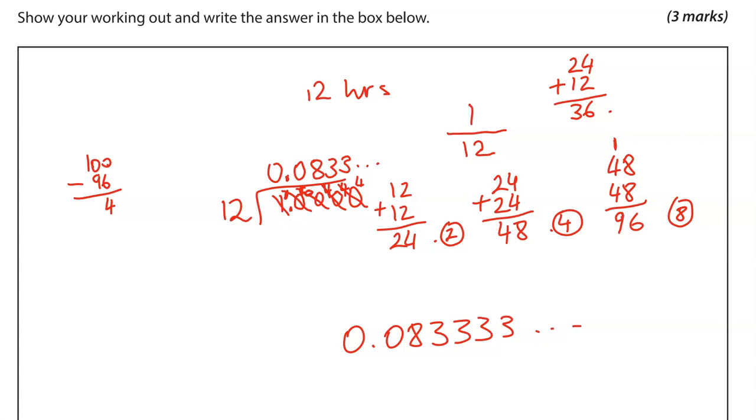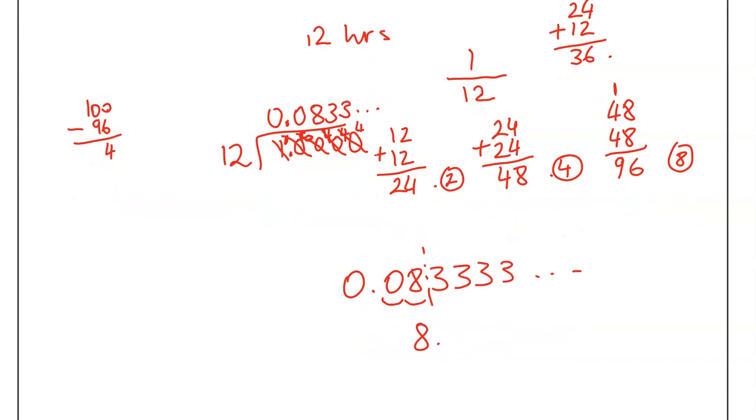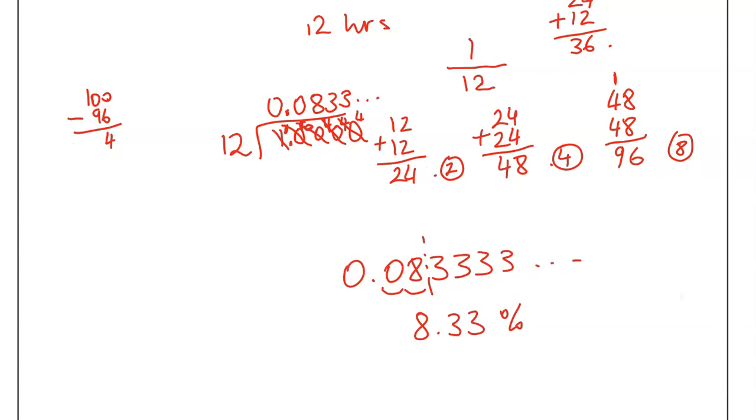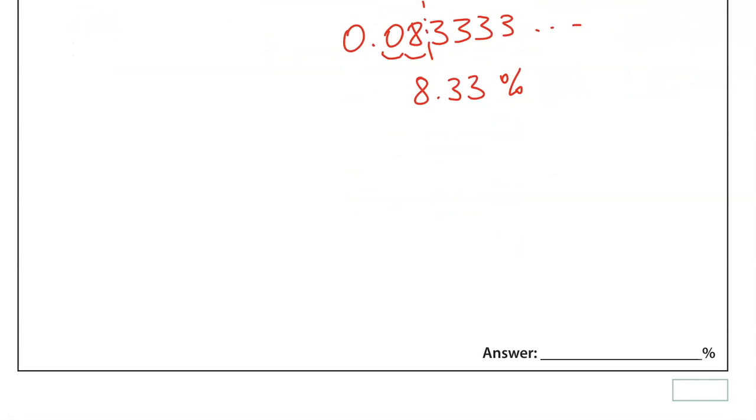But we need to convert it to a percentage. Again, remember, percent and pence. So we're looking for 2 digits like in money after the decimal point. So this is like 8 pence something. So it's 8.33%. Just going to stop it there. You could say 8.3% as well. I'm going to write it like that. 8.3%. It doesn't make any difference.